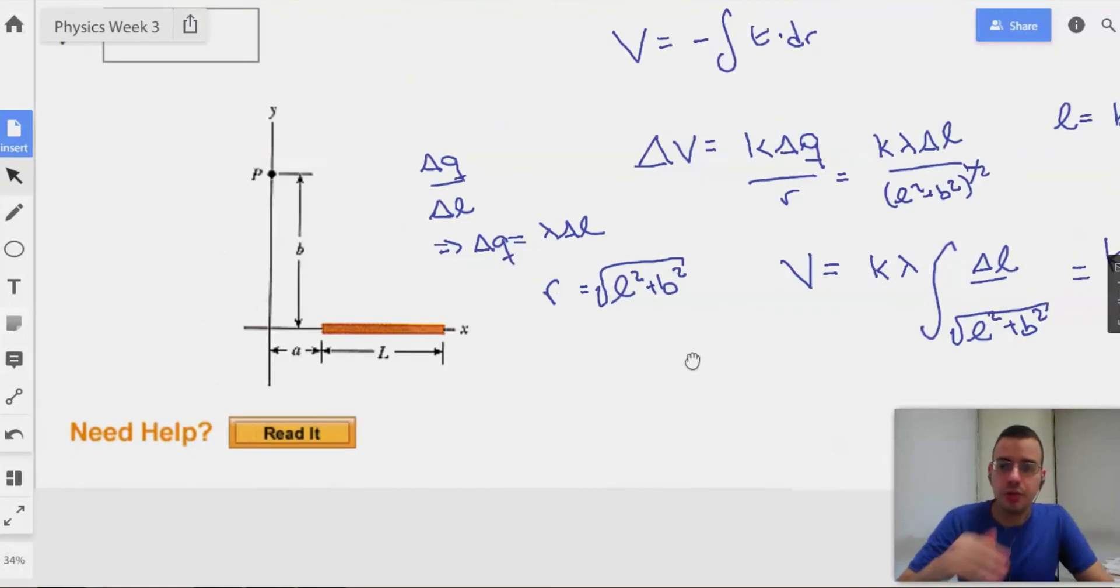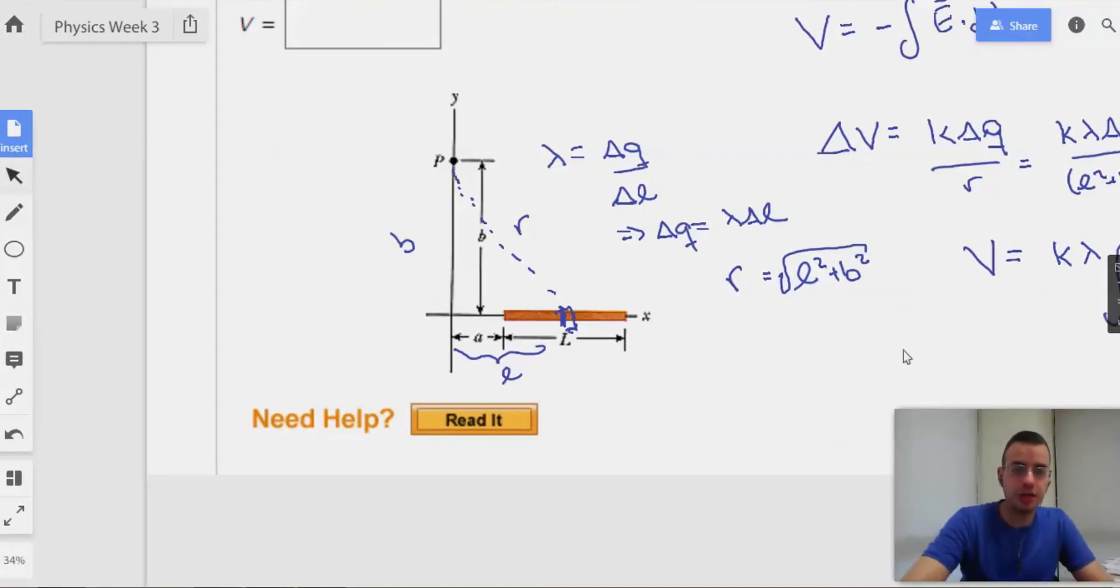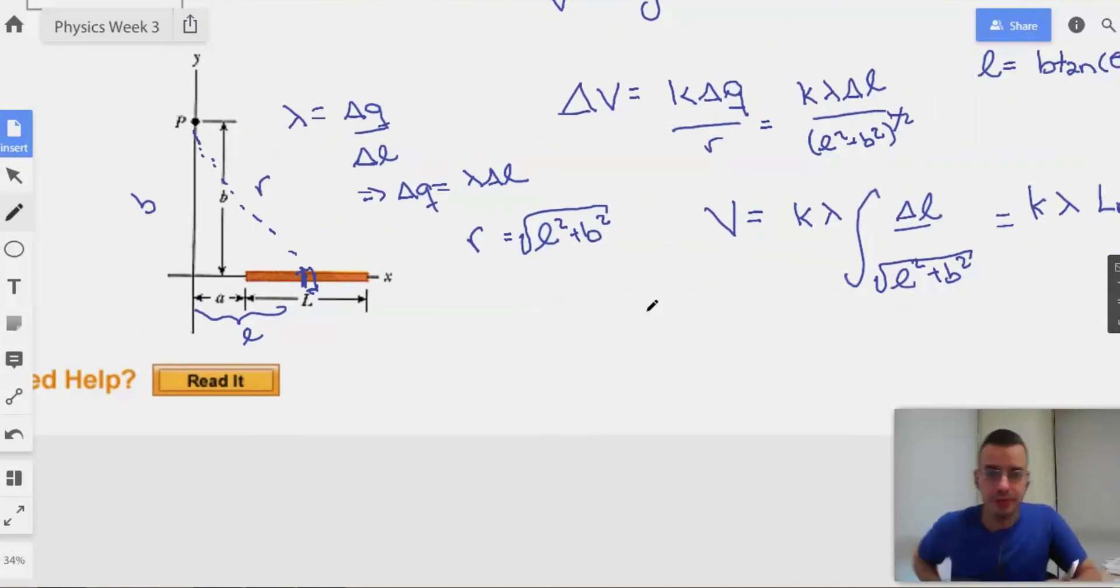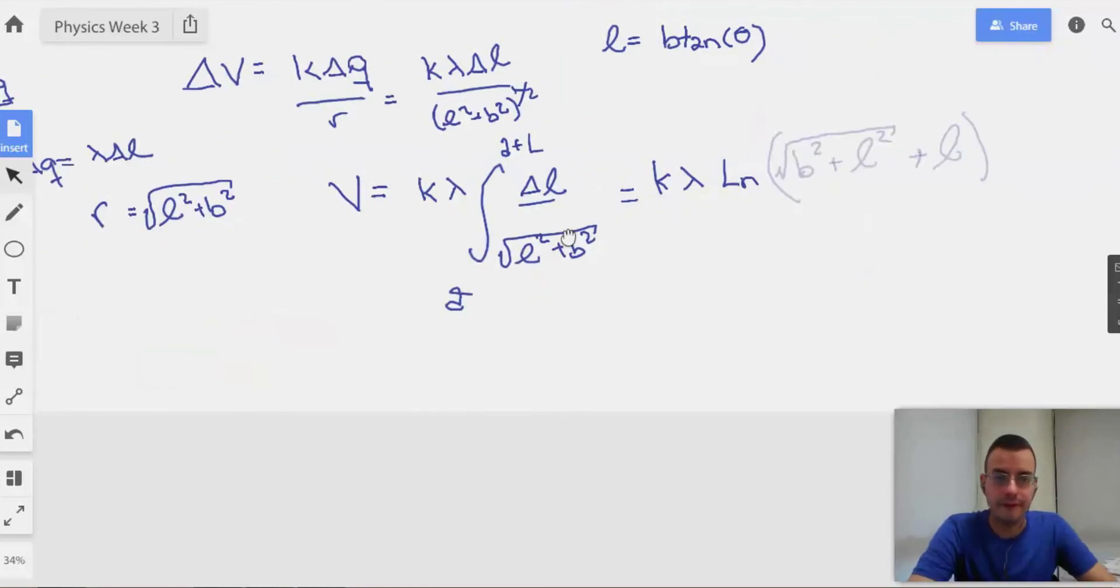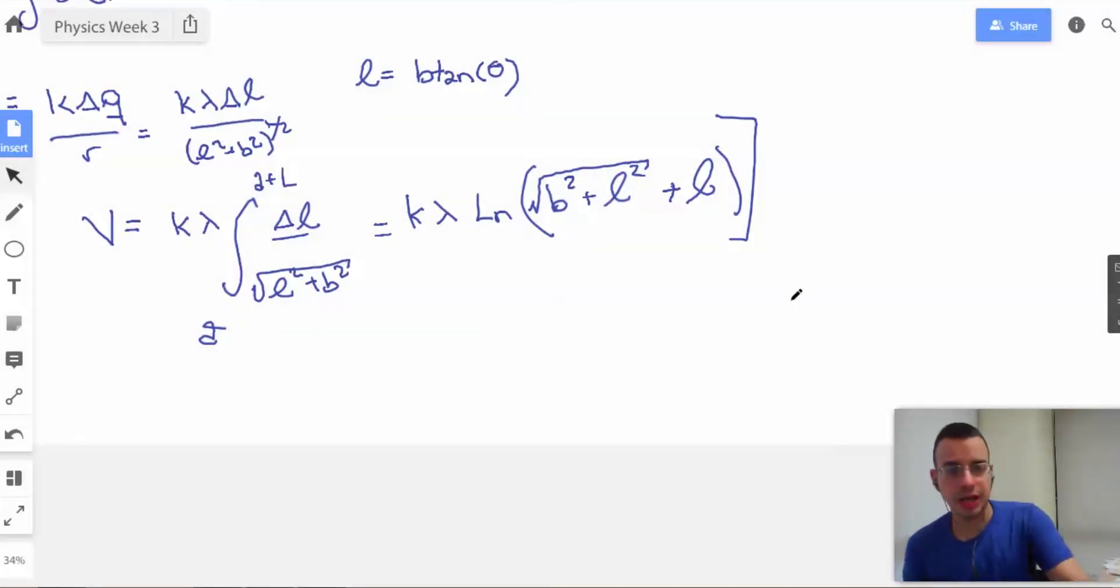And then we know that we're gonna do this, the limits of integration here, which I failed to mention earlier, will be from little a to little a plus L. So, the limits of integration on this guy will be from a to a plus L.